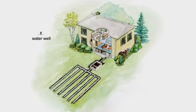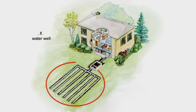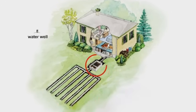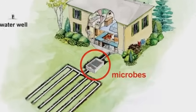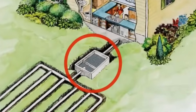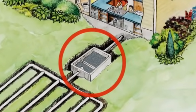Anything that goes down the drain — every drop from your shower and every flush of your toilet — flows out through the septic system. Typically a septic system consists of a storage tank, a network of pipes, and billions of microorganisms inside the tank that help process your waste.